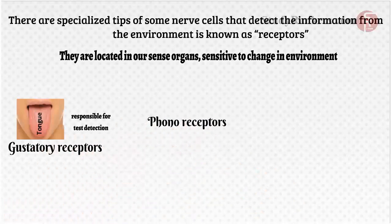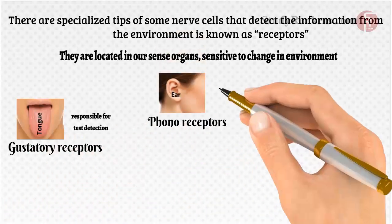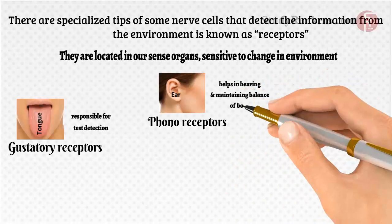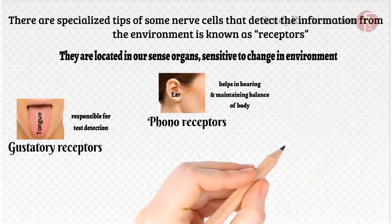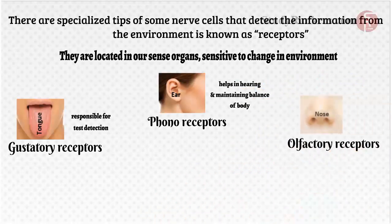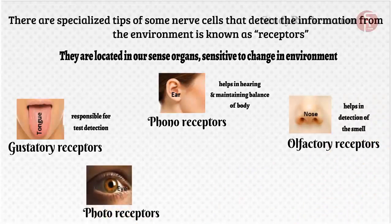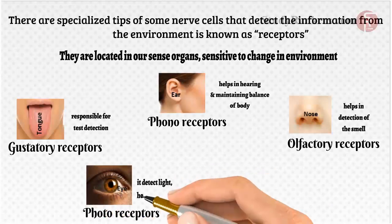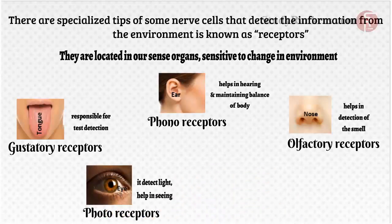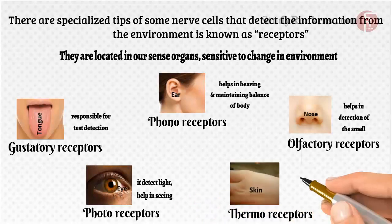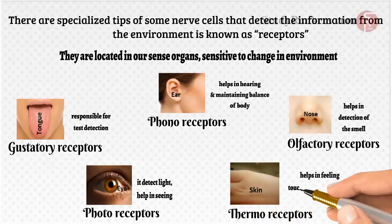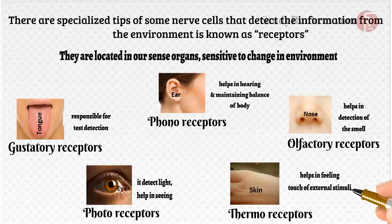Other types of receptors include: phonoreceptors in the ear, which help in hearing and maintaining the balance of the body; olfactory receptors in the nose, which help in the detection of smell; photoreceptors in the eye, which detect light and help in seeing; and thermoreceptors in the skin, which help in feeling touch of external stimuli such as heat, cold, and touch.